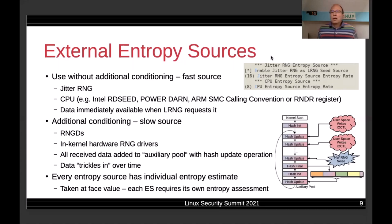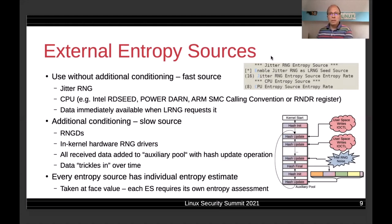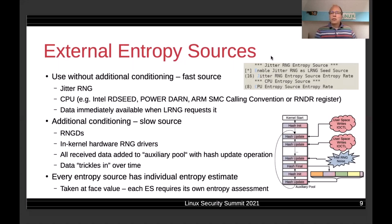Data from slow sources is stored in the auxiliary entropy pool shown in the lower right of the design picture. The auxiliary pool concept is straightforward — it is a hash context. Every time data is received, it is inserted into the auxiliary pool via a hash update operation. When data is required from the auxiliary pool, the message digest is created, followed by an immediate reinitialization of the hash context and insertion of the temporary receipt buffer into that state to ensure backtracking resistance.